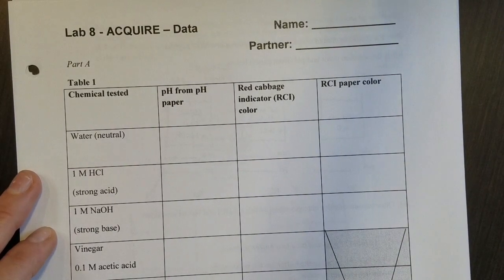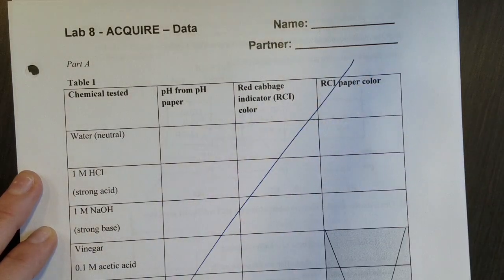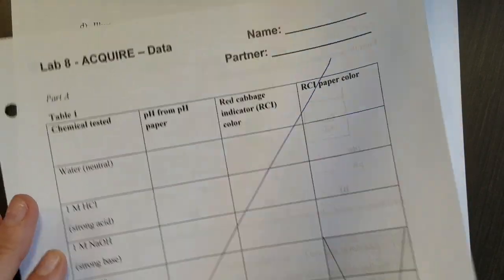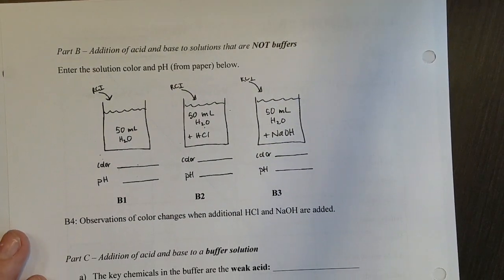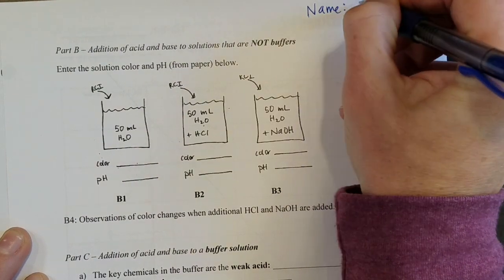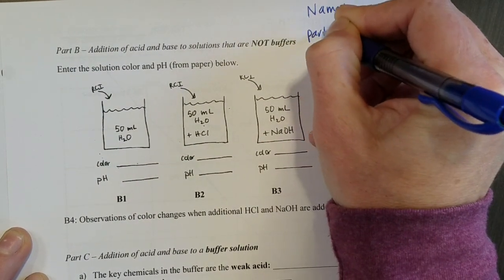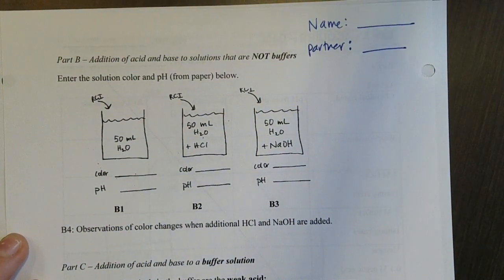So continuing on to page 47, remember that we are not doing part A so that means this whole page you don't need to do. The first page that you'll be scanning and uploading will be this page, page 48. So make sure that up in the corner you put your name and if you worked with a partner, make sure you're each turning in your own unique work but make sure both of your names are there.